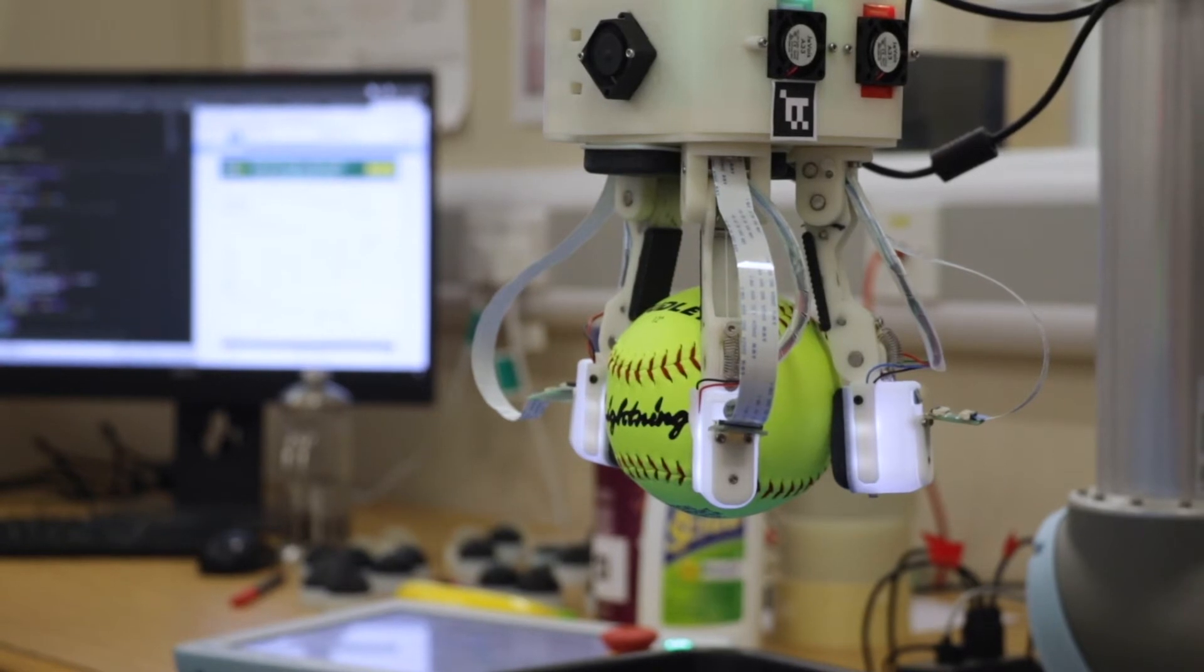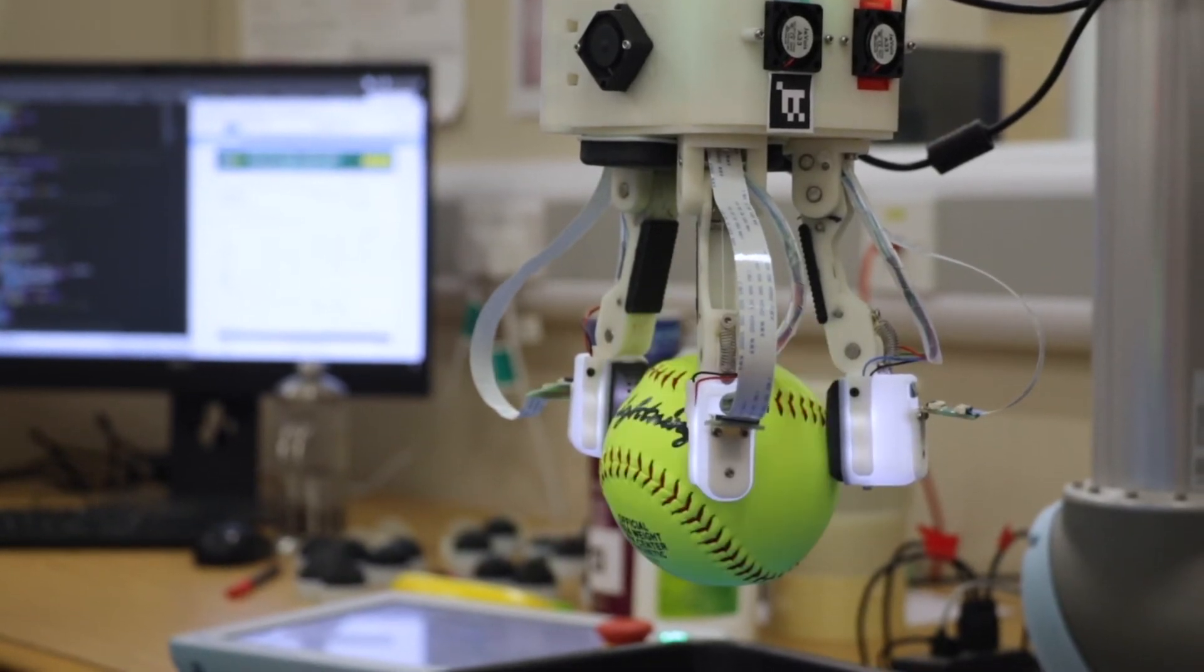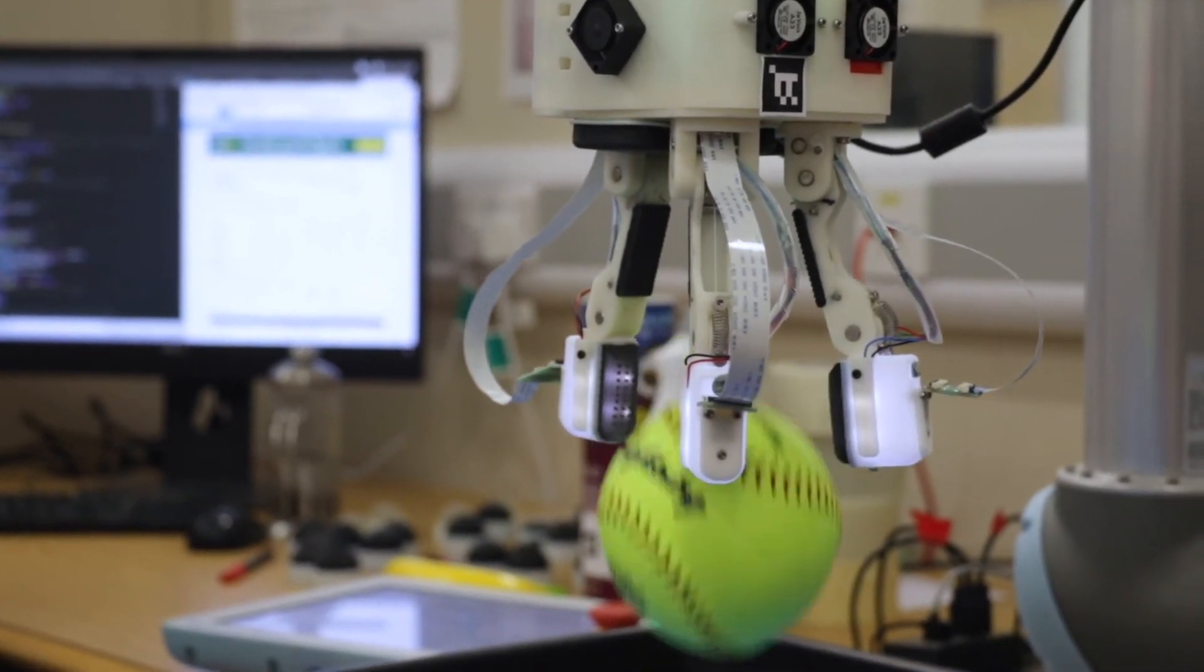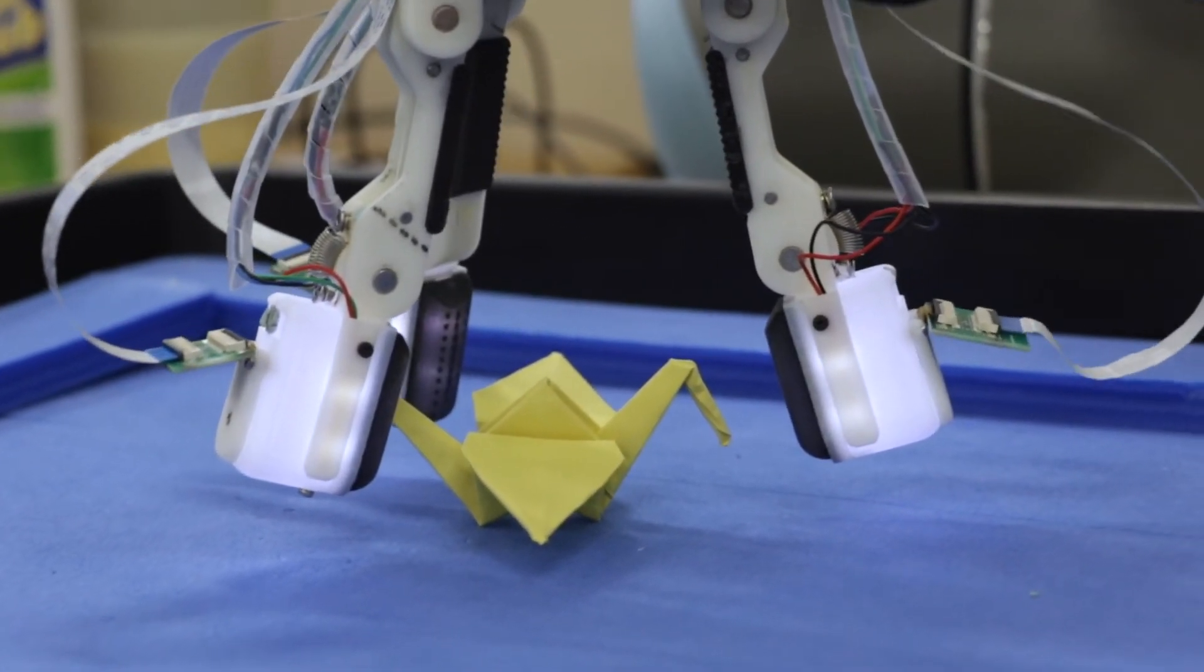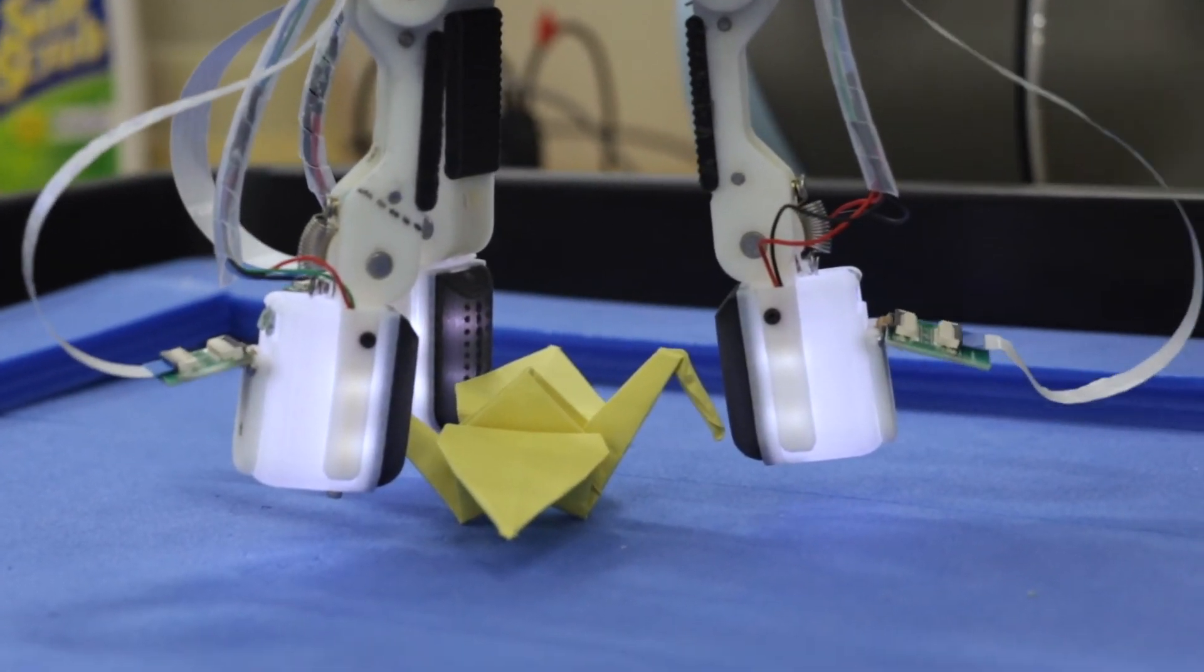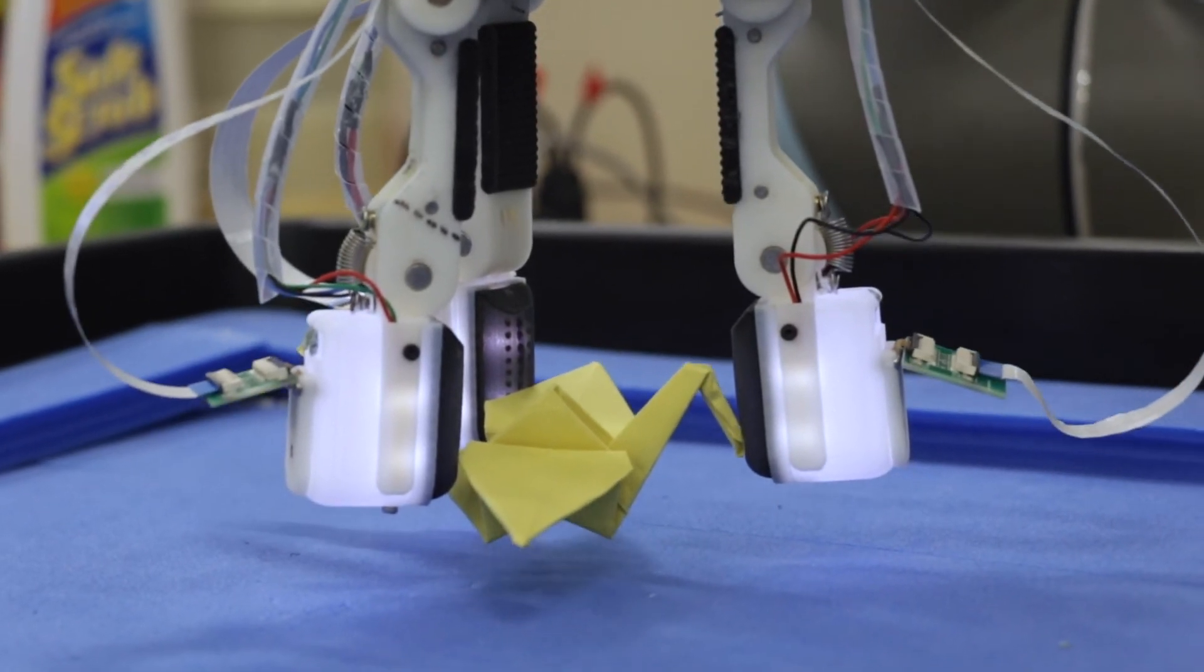This robot has an industrial robot arm, and on the end of that we've mounted our hand so we can test scenarios like having that hand pick up unknown items. This kind of application is important for logistics where at the moment they use humans to pack items into boxes.